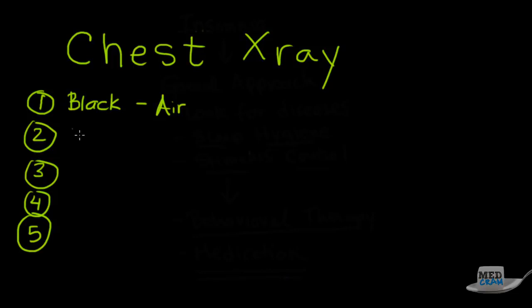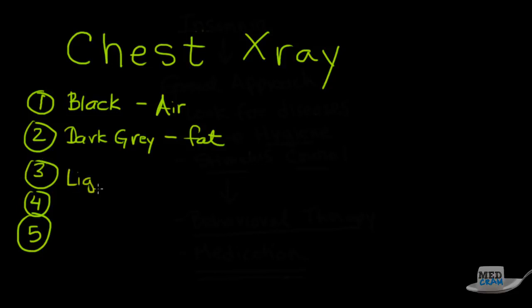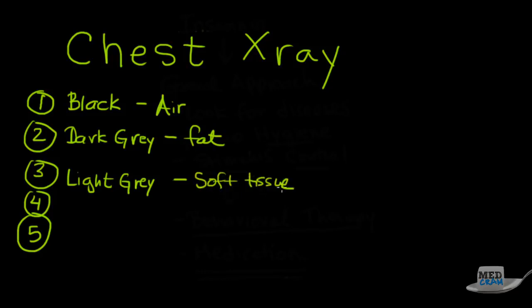Things that are dark gray are going to look like subcutaneous tissue or fat. Three, you'll kind of see light gray, and that's usually soft tissues like the heart, blood vessels, things of that nature — so soft tissue. Four is going to be just off-white, and this is going to be bone — ribs, clavicle, things of that nature.